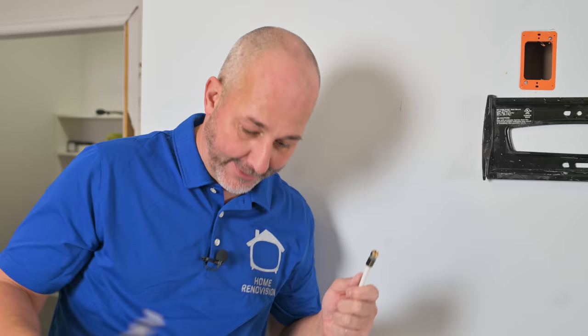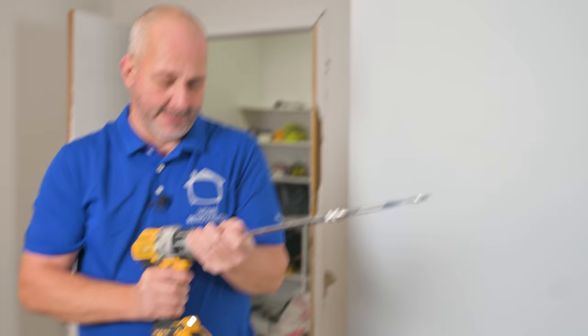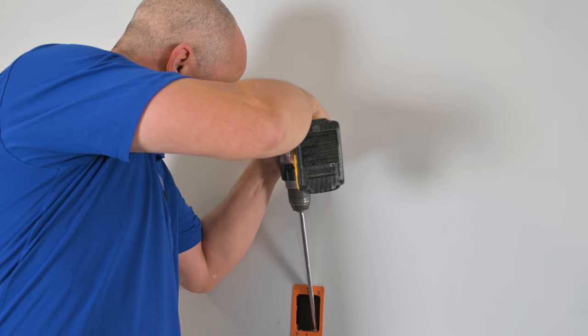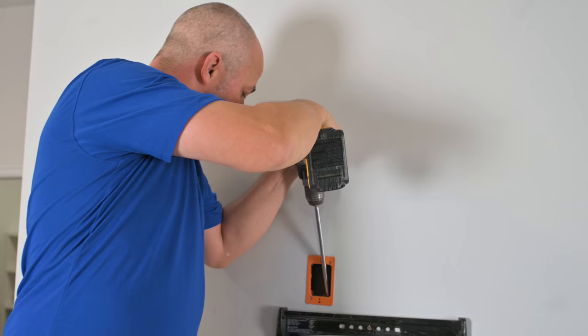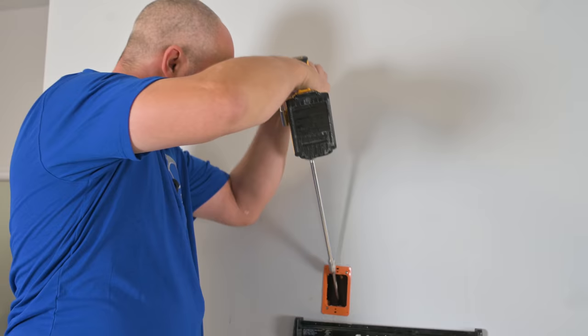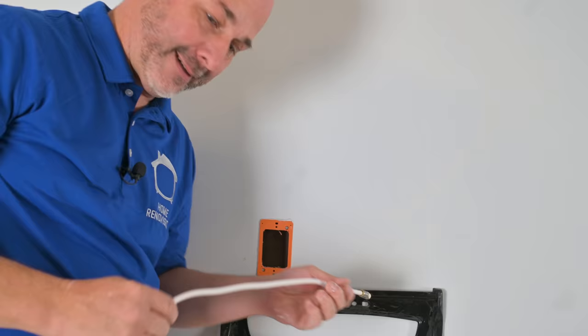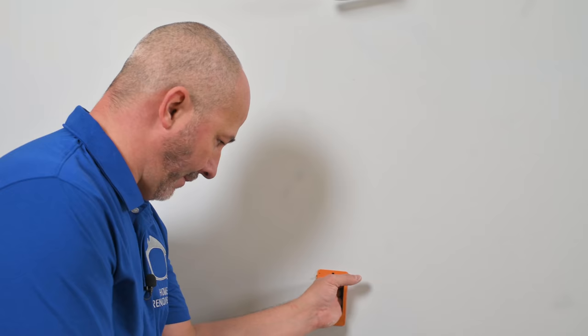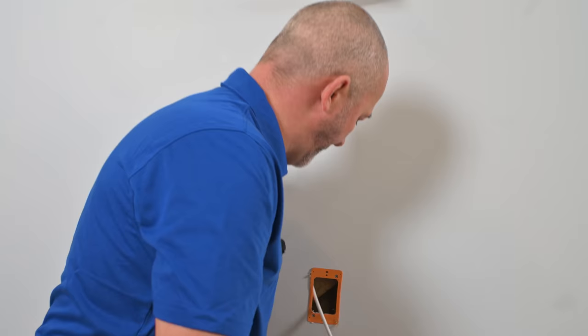So we'll try again. I'm going to get my bit extender and a spade bit. I'll make another hole. Yeah. There we go. Now that was a much bigger hole that'll make this easier. There we go.